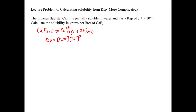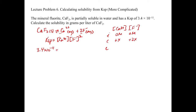As in the previous problem, we write down our KSP, which is 3.4 times 10 to the minus 11. We need variables for calcium and fluoride, so we set up our ICE table with calcium 2+ and F⁻ at the top. We start with zero molar and zero molar because nothing is dissolved yet. Now here's where we have to be careful with stoichiometry: we have plus X for calcium, but plus 2X for fluoride, because when it dissolves it makes two fluorides for every one calcium. So at equilibrium we have X and 2X.